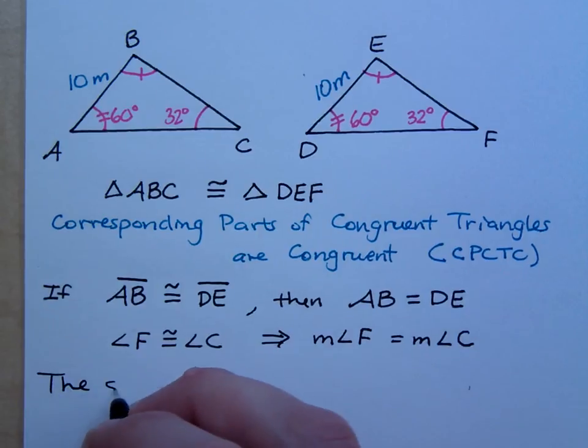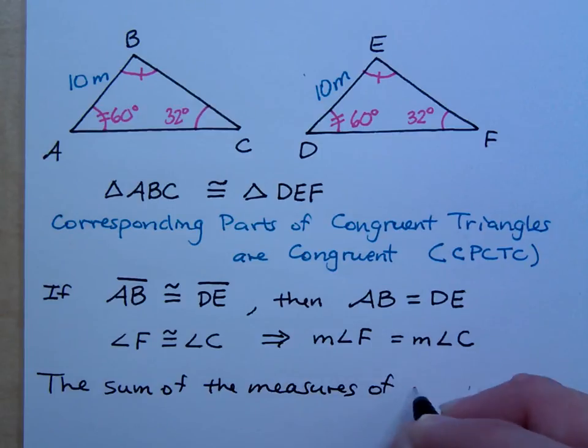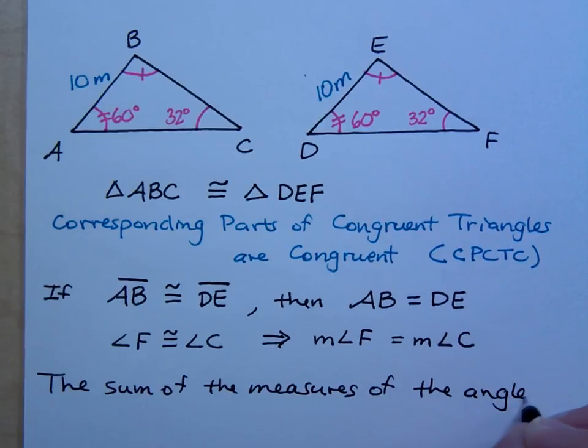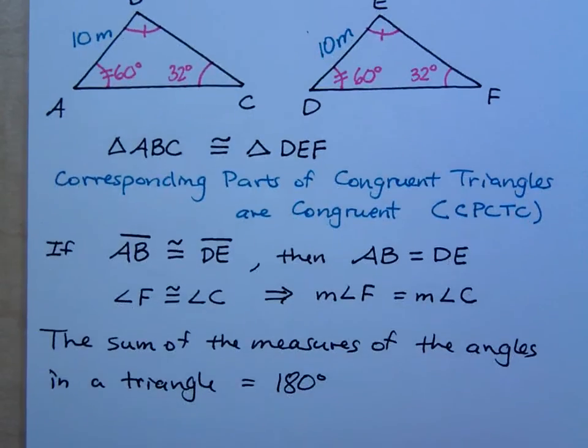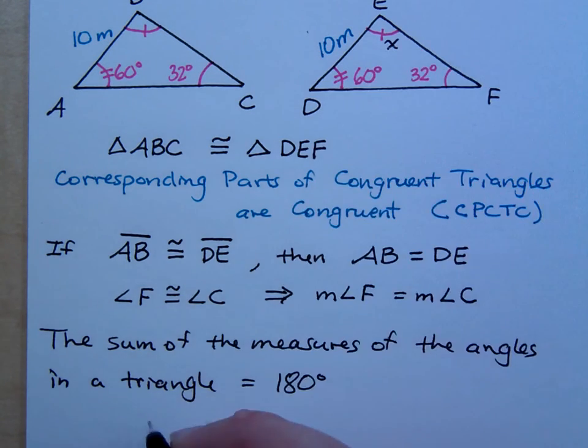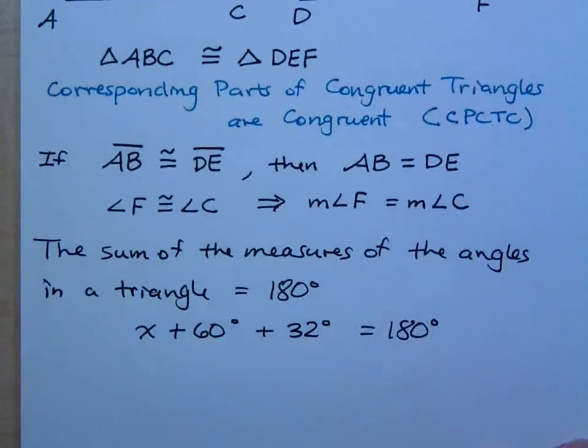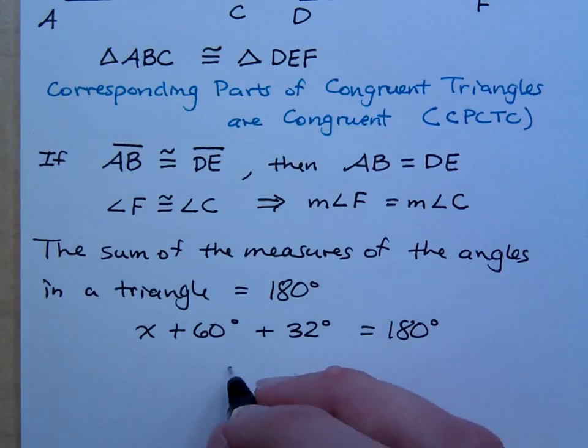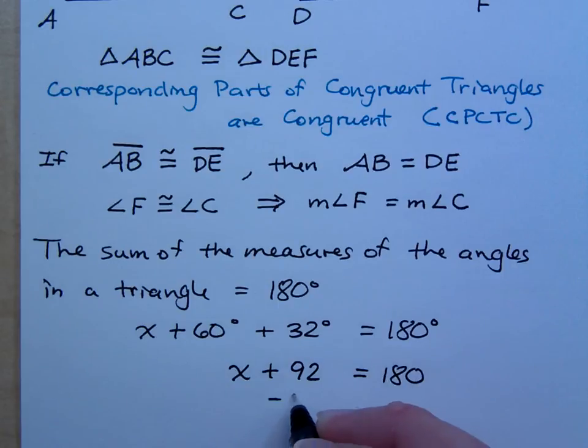So, just in case you guys have forgotten, the sum of the measures of the angles in a triangle equals 180 degrees. So, in this diagram, if you make this guy equal X, that means X plus 60 plus 32 equals 180. And this is just a simple algebraic equation for you to solve. That means that X plus 92 equals 180, which means that X equals how much?